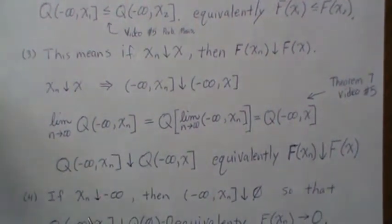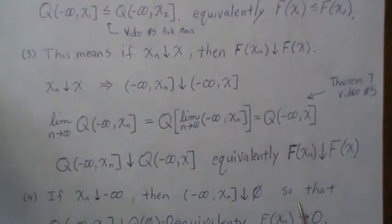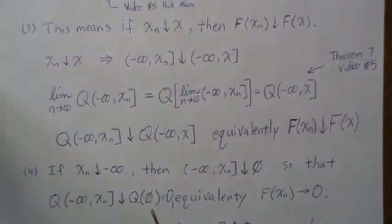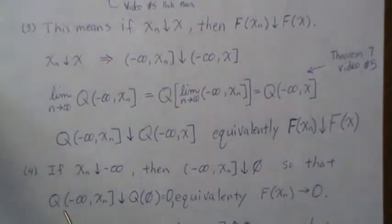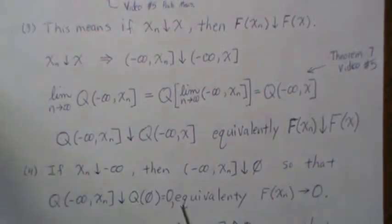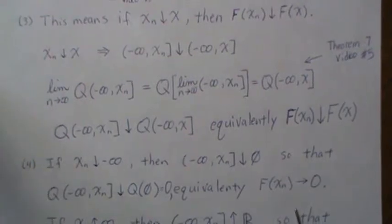If xn decreases to negative infinity, this set goes to the empty set, because it gets smaller and smaller until in the limit it becomes empty. So this probability decreases to the probability of the empty set, which is zero. Because it's a decreasing set, we can pull the limit inside the probability, and the limit of this interval is the empty set. The probability of the empty set is zero, which is equivalent to saying F of xn goes to zero as xn goes to minus infinity.